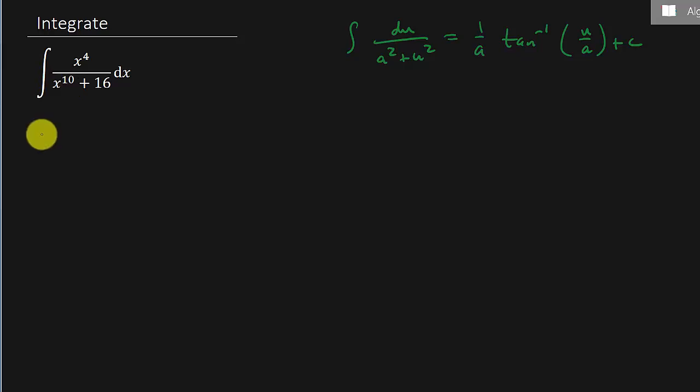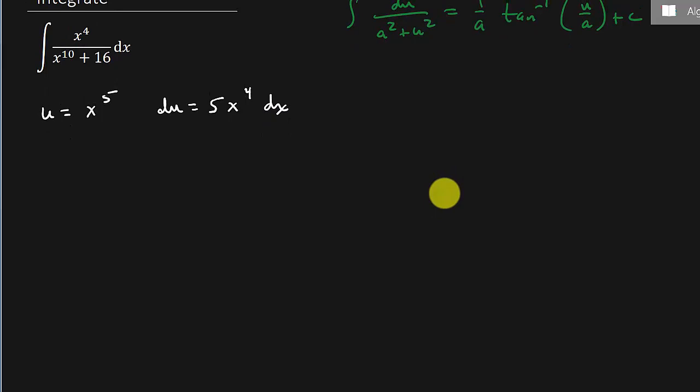So I'm going to let u equal x to the fifth. Alright, and so that's going to give me du is 5x to the fourth dx. So let's see, let's rewrite this thing. Let's write this as x to the fourth dx over x to the fifth squared plus 16 dx.